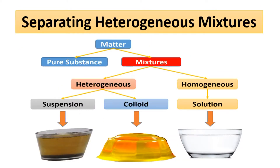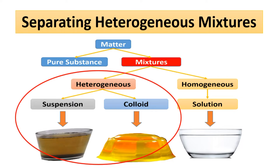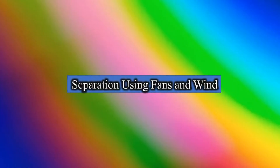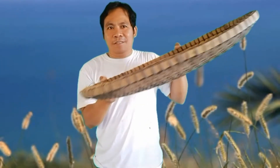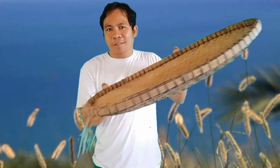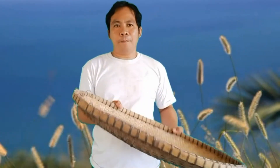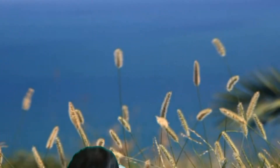Heterogeneous mixtures are easier to separate because you can still see their components. Separation using fans and wind — this method is called winnowing. Grains are tossed in front of fans; the wind blows off the lighter pieces of hull and dirt while the grains fall straight into the containers.